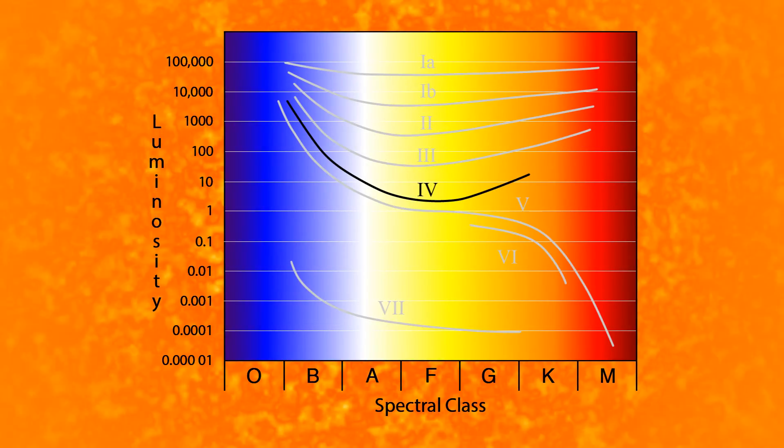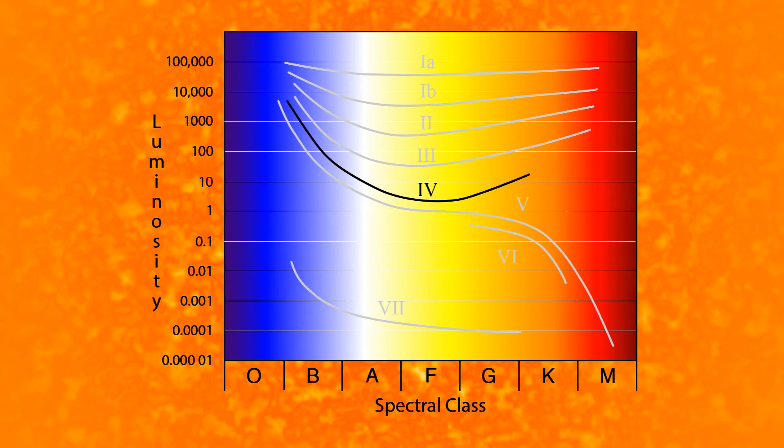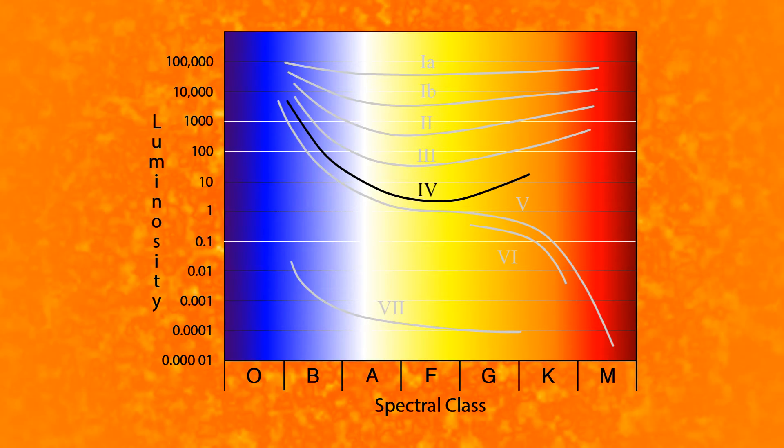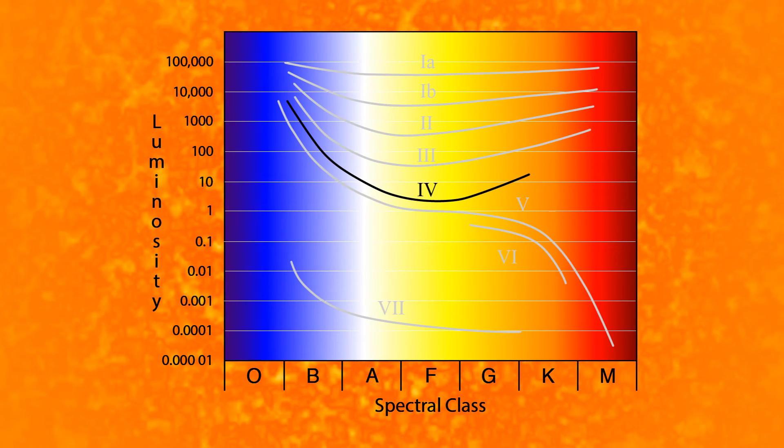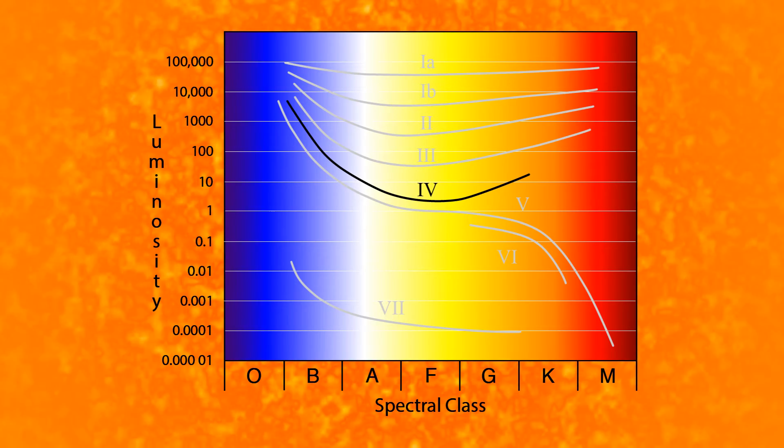Numeral IV identifies the sub-giants. These stars have burned through all their hydrogen and have started to burn helium. They are developing into the giant stage.